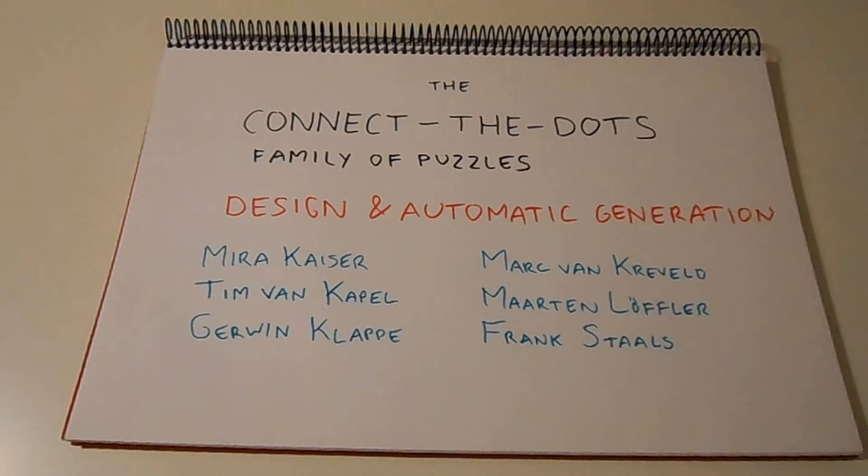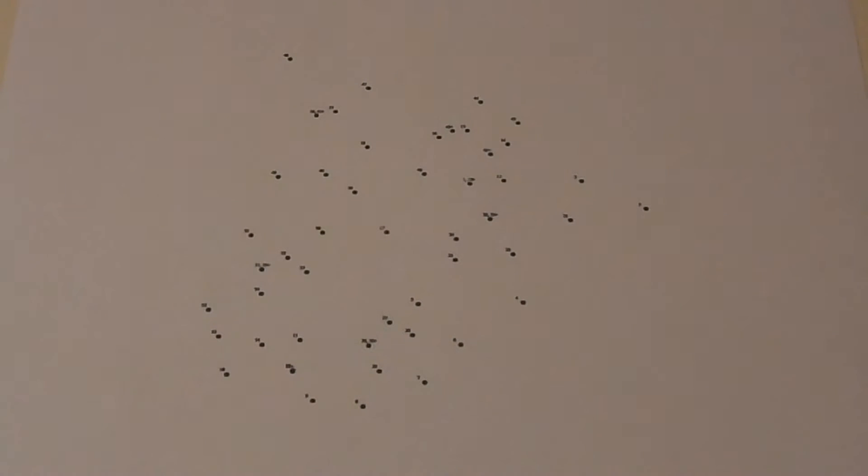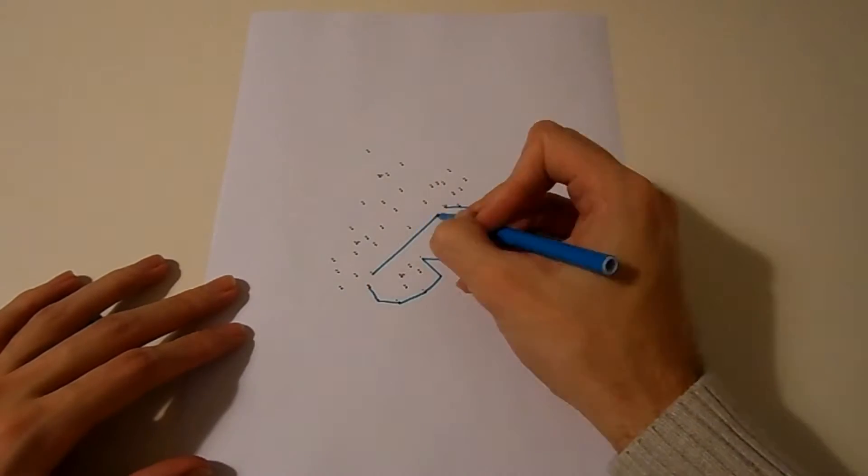You've probably seen a connect the dots puzzle before. It's a puzzle that consists of a collection of dots on a piece of paper, with a number associated to each dot, where the goal is to draw lines between dots with consecutive numbers. The idea is that the resulting drawing then forms a nice image.